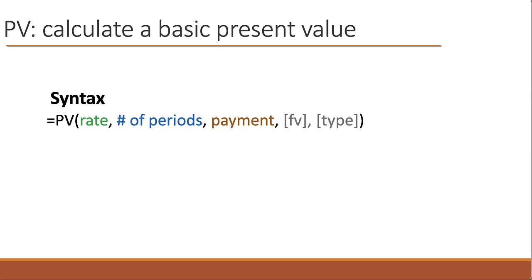Now you notice there are two optional arguments here. Future value, the FV, that is what will be the future value when the payments have run their course. By default it's zero. And the type is whether the payment happens at the beginning or the end of the period. By default, which is what usually happens is it's at the beginning.